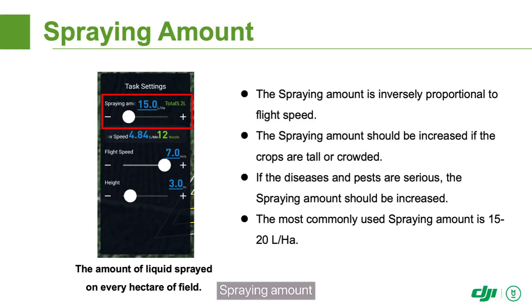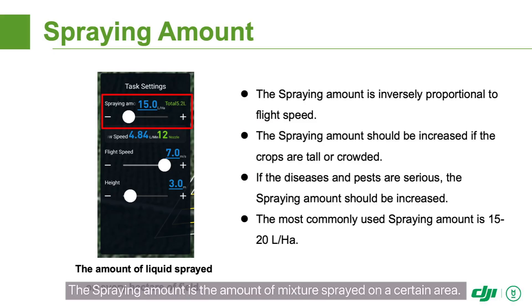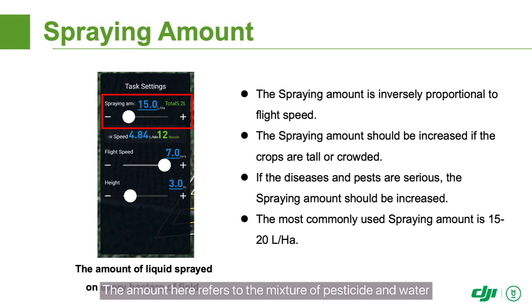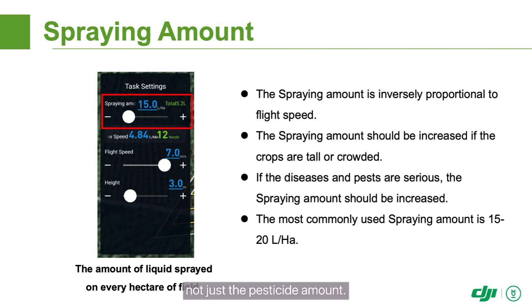Spraying amount: The spraying amount is the amount of mixture sprayed on a certain area. The amount here refers to the mixture of pesticide and water, not just the pesticide amount.